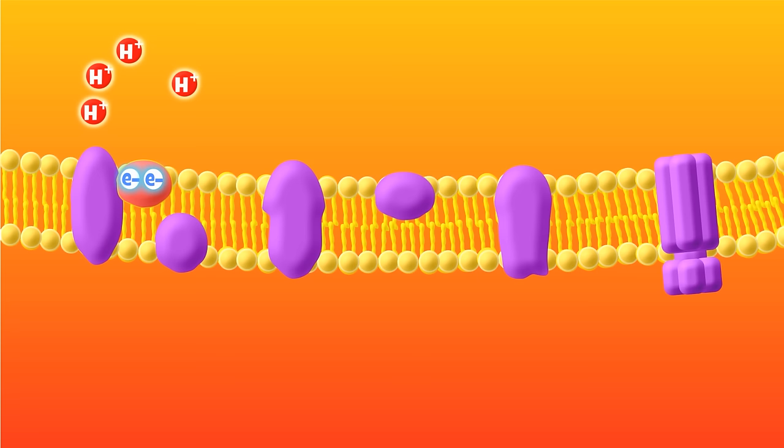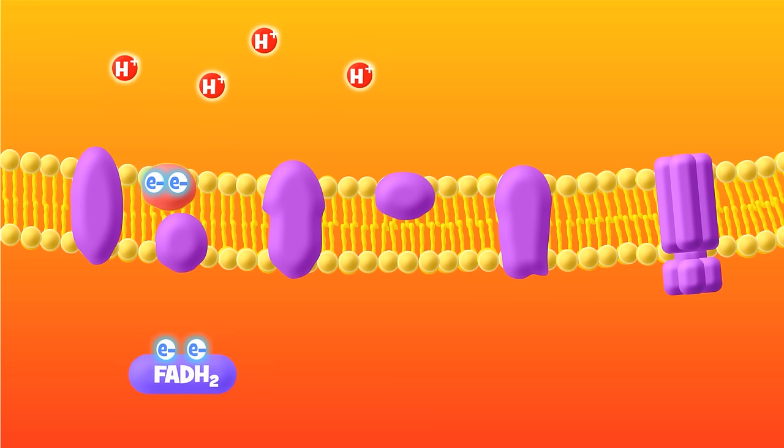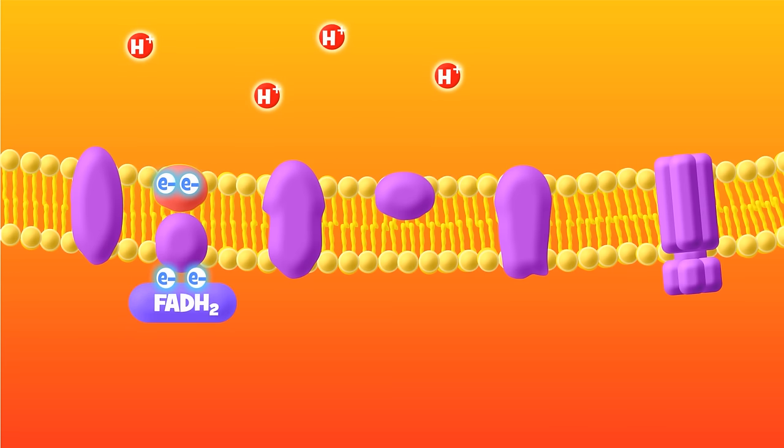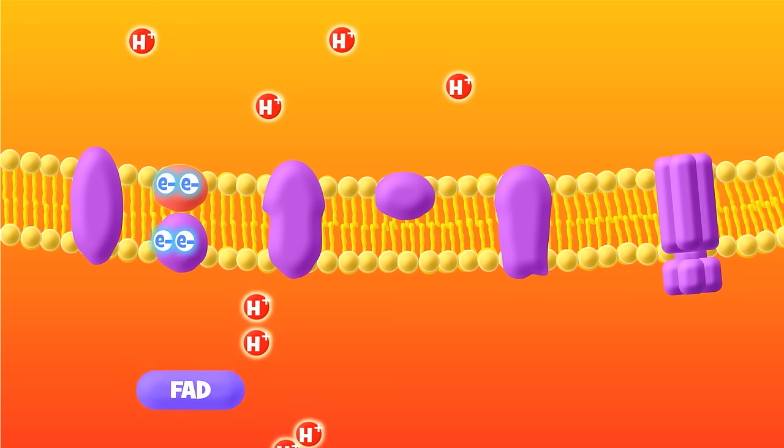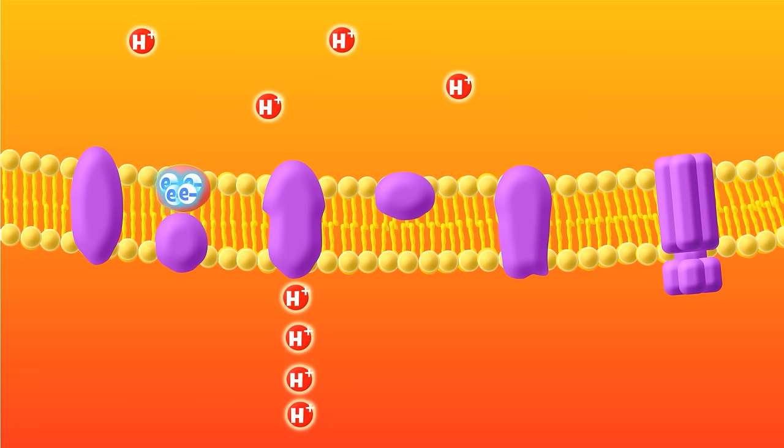The electrons are then transported by this special red molecule toward their next destination. The red molecule also picks up the electrons donated by FADH2, that other electron carrier that we made during the Krebs cycle. All of these electrons are then passed on to another protein complex.